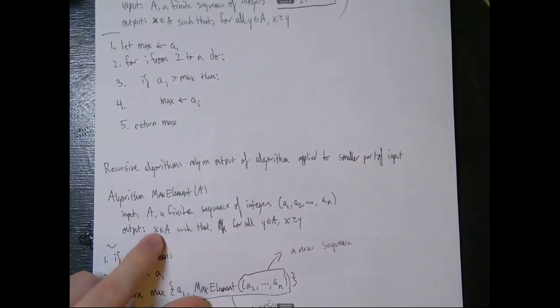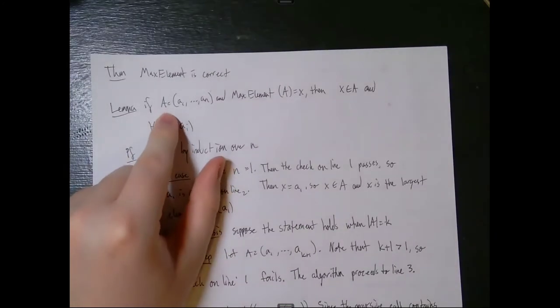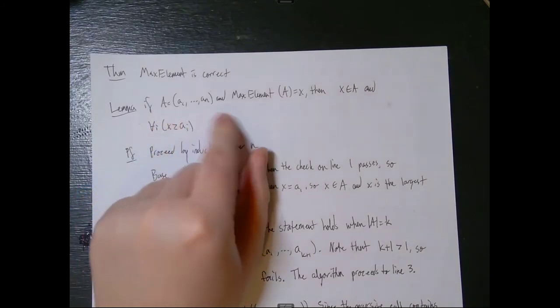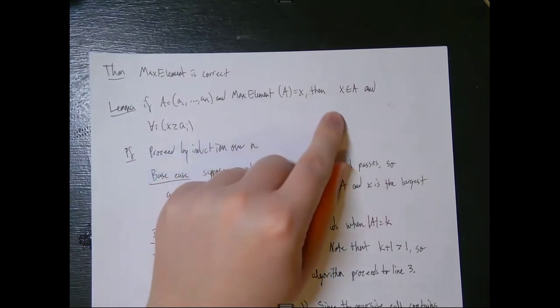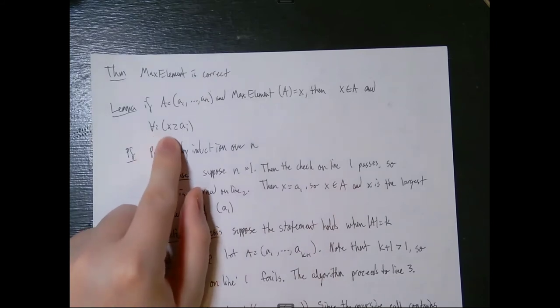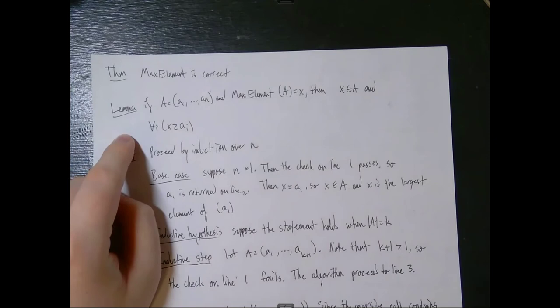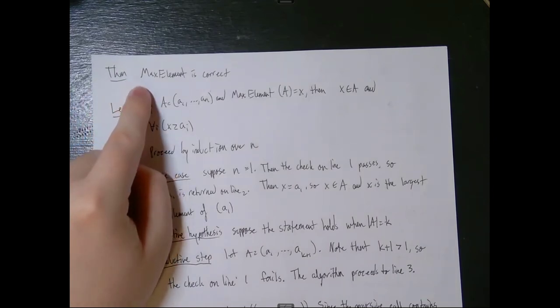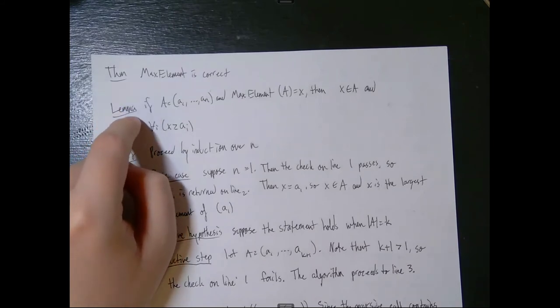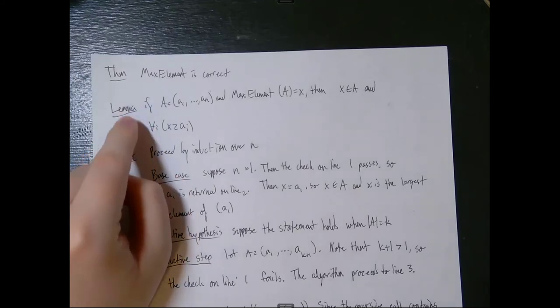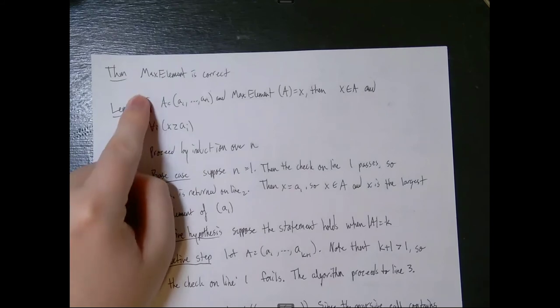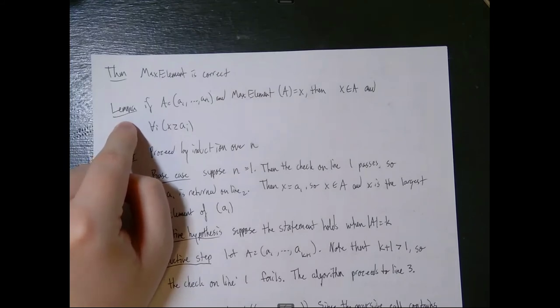Our lemma says: if the sequence a = (a₁, a₂, ..., aₙ) and max_element(a) = x, then x is an element of a, and for all y in a, x ≥ y. This is what we need to show. If we can show that this lemma is true, then we can say the theorem 'max element is correct' is proven as a direct result of this lemma. Take a moment to make sure you feel comfortable with why this lemma shows that max element is correct.